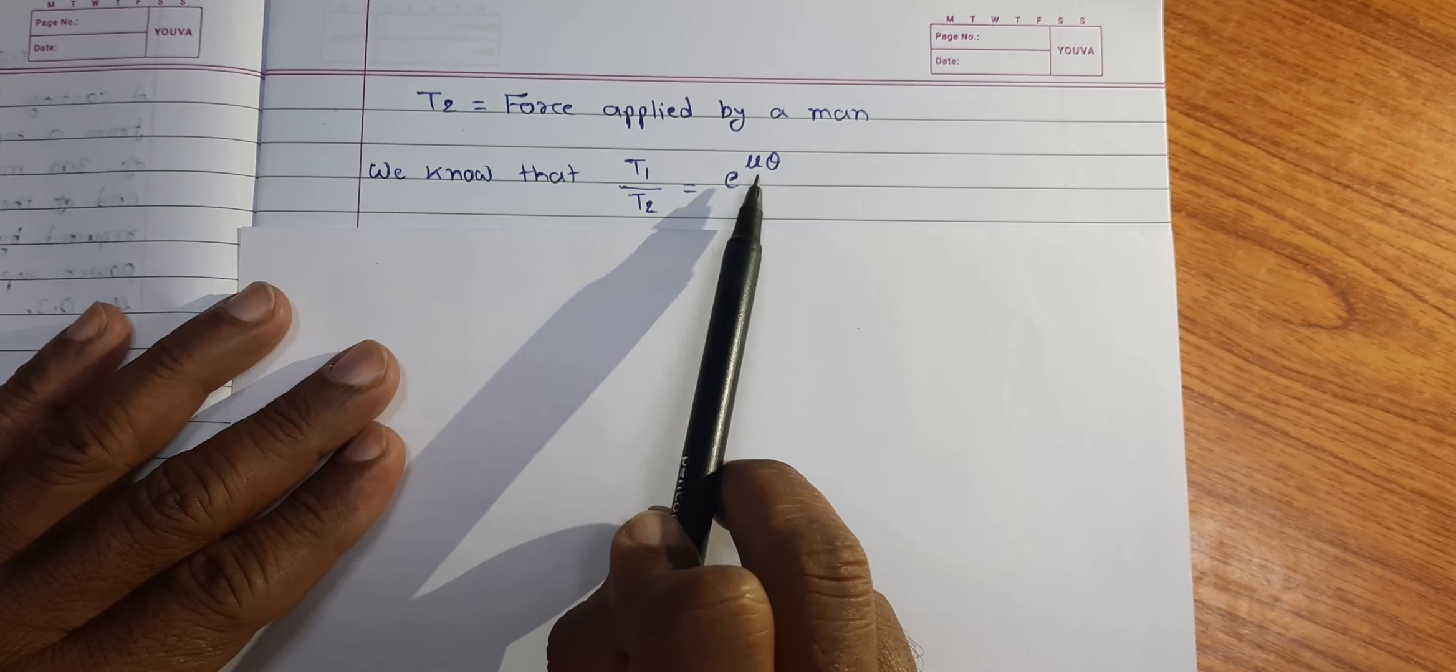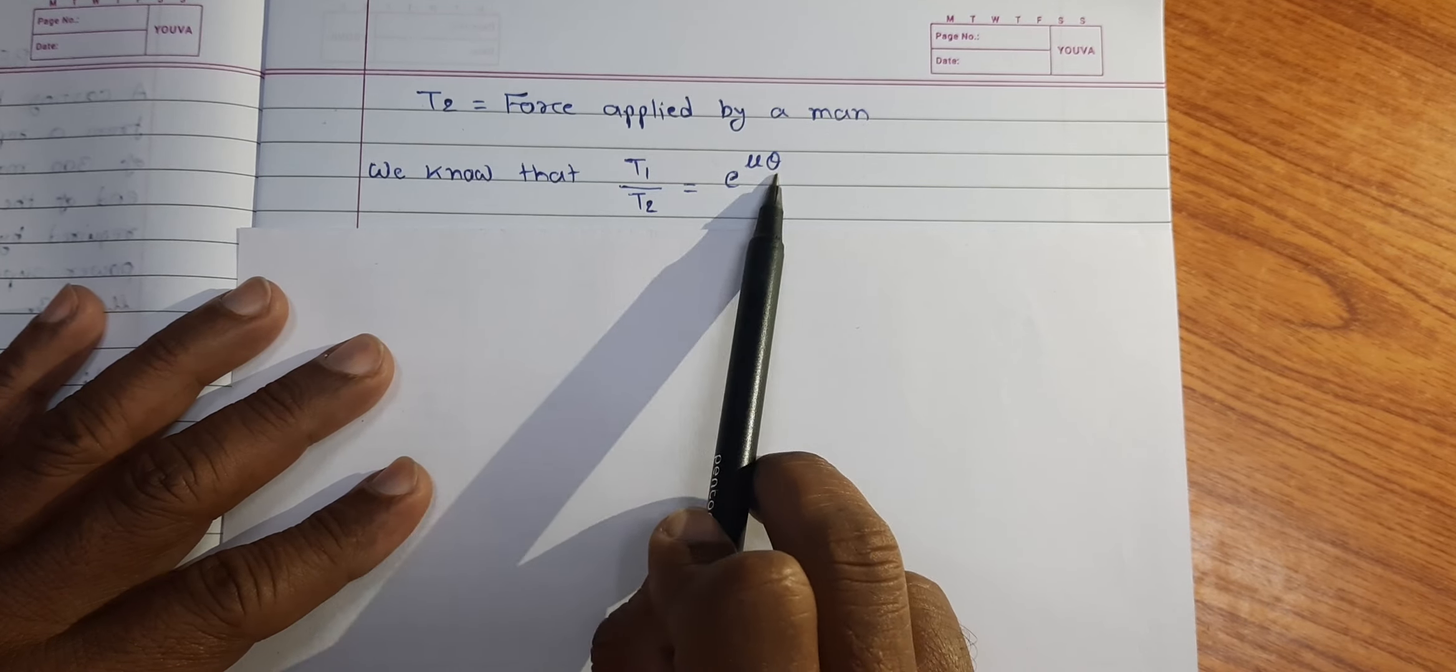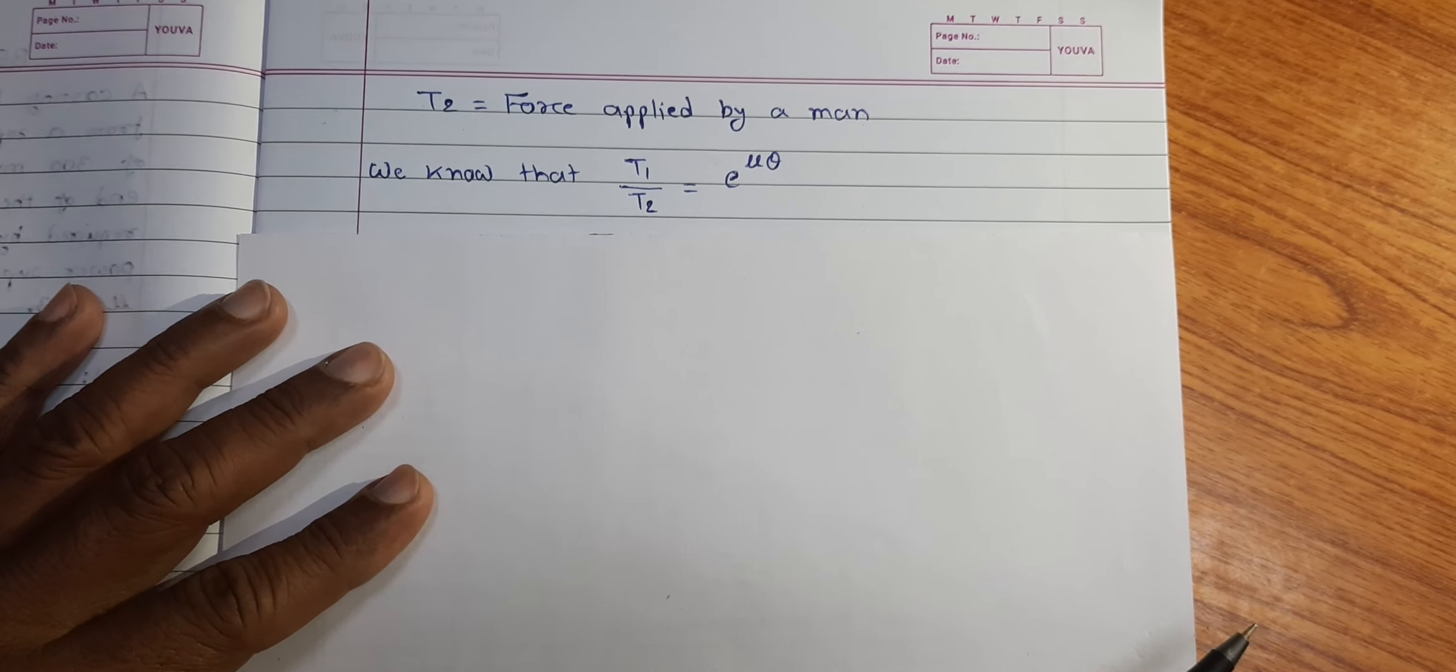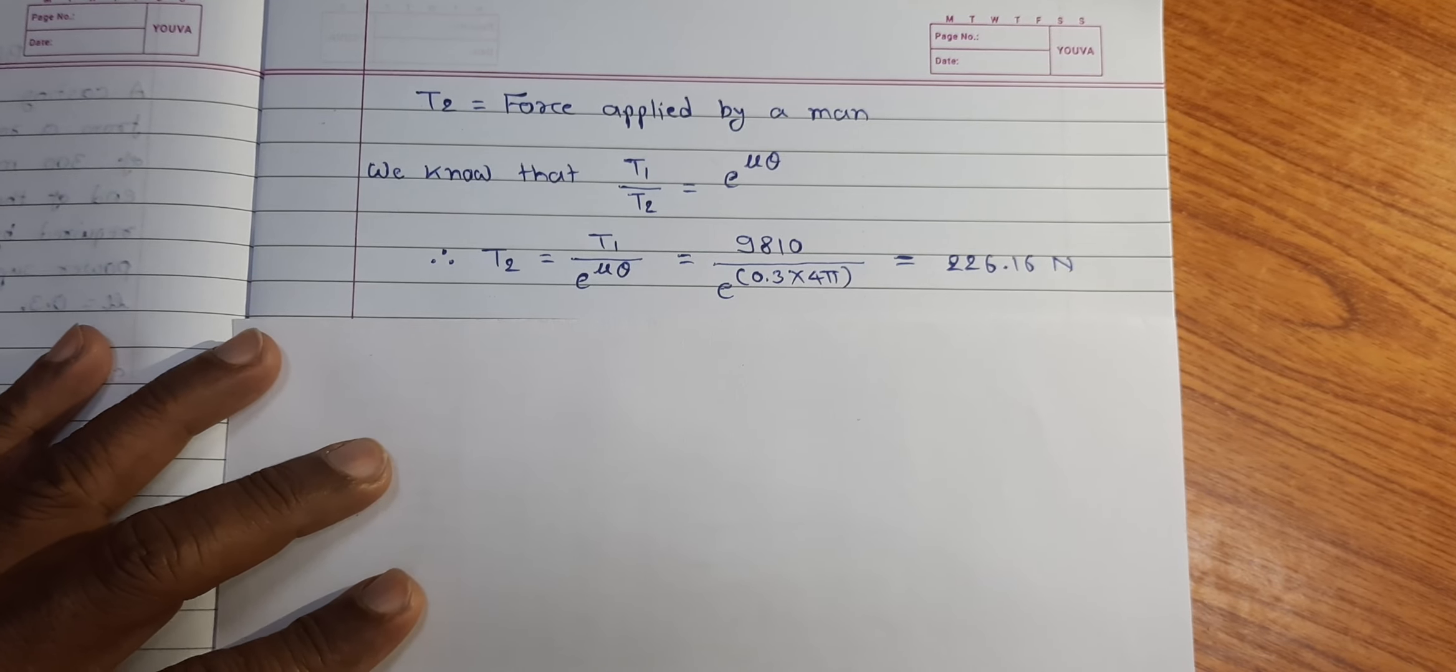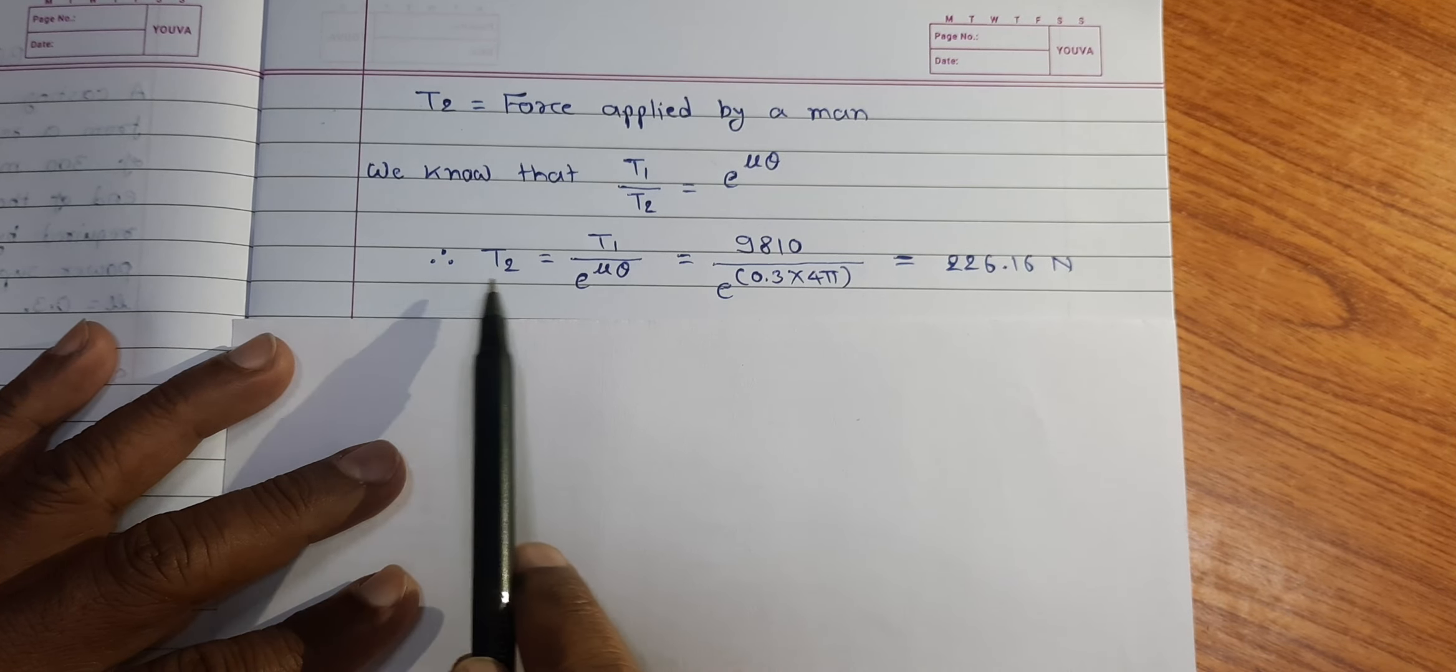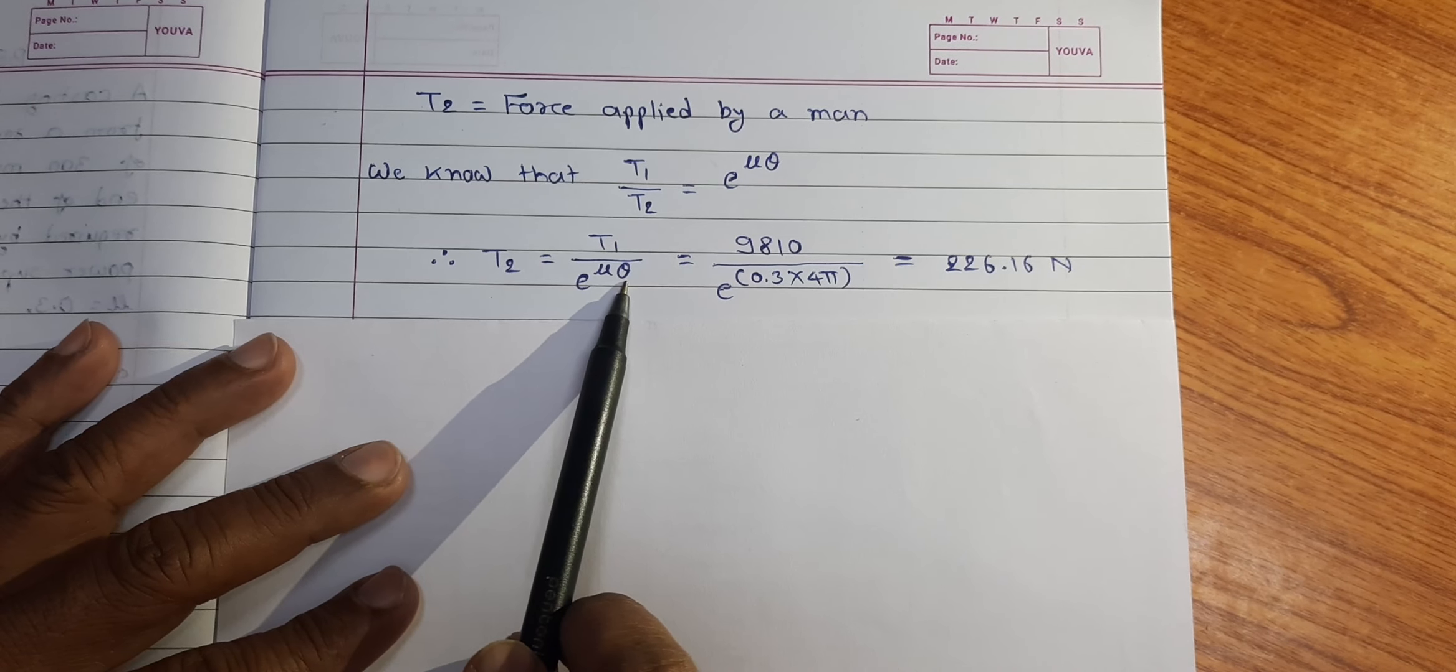So, we can rearrange this relation and write T2 is equal to T1 upon e raised to mu theta.